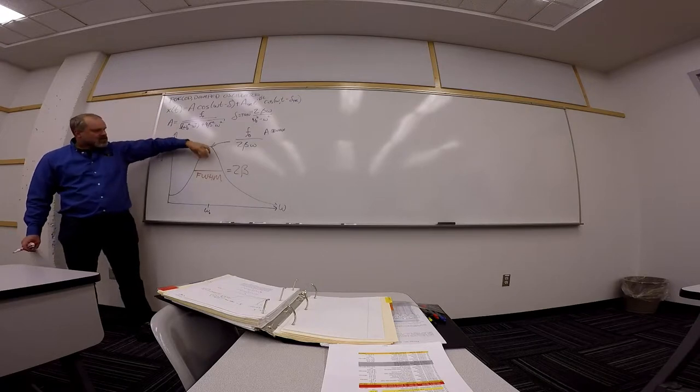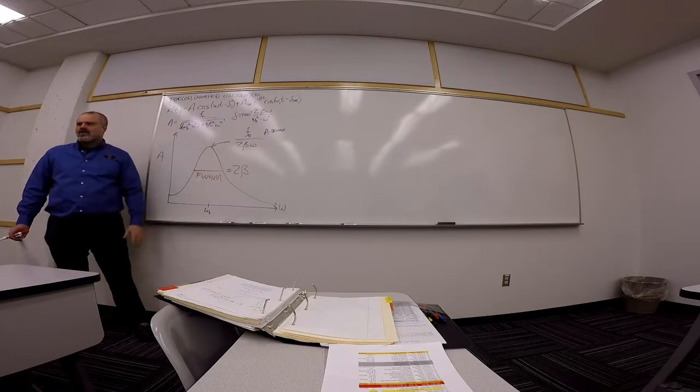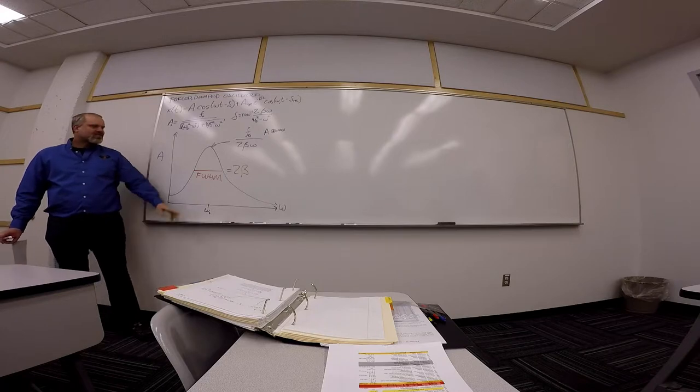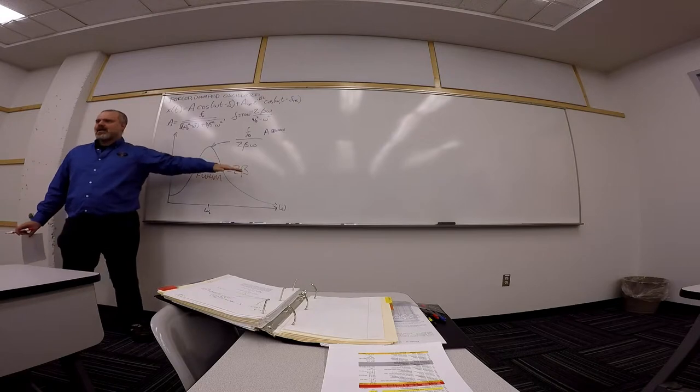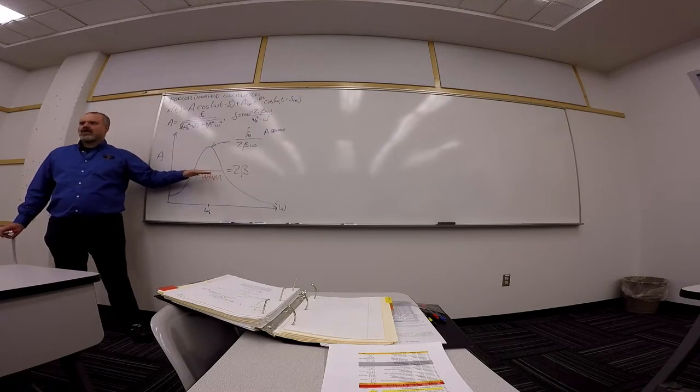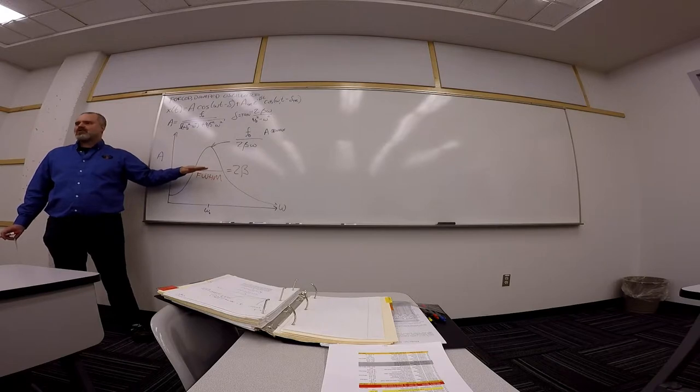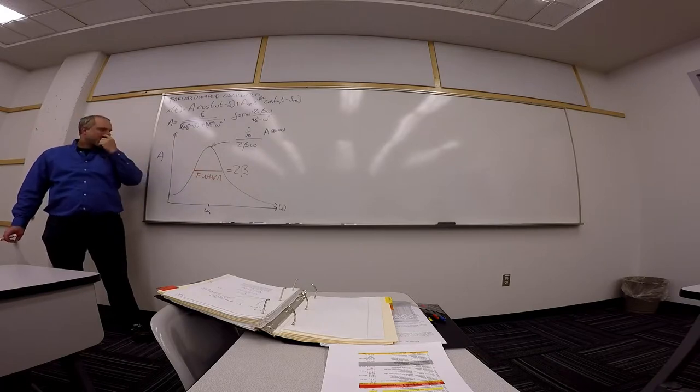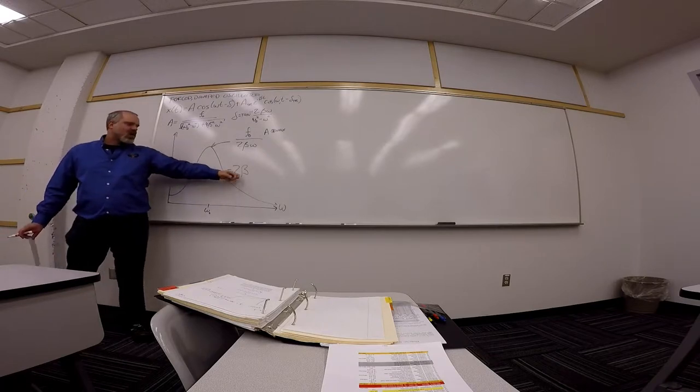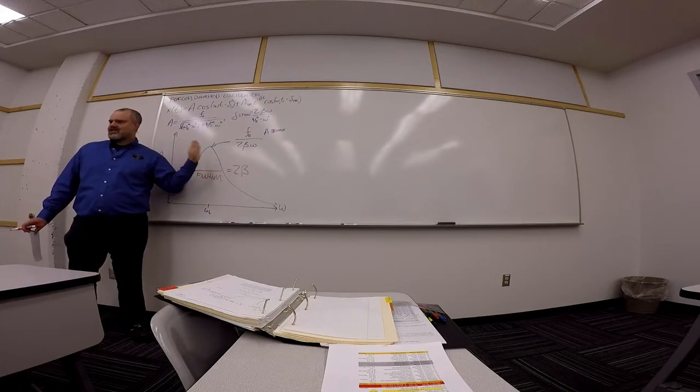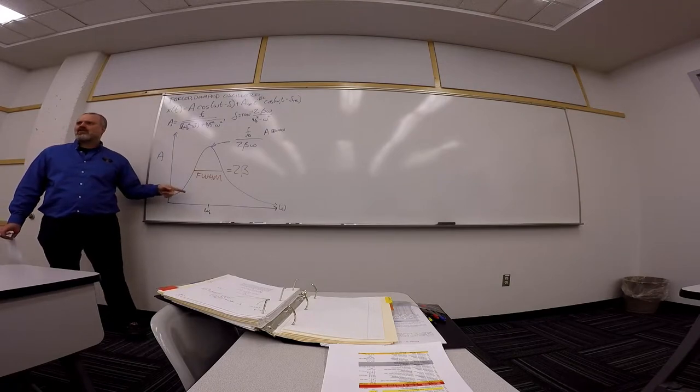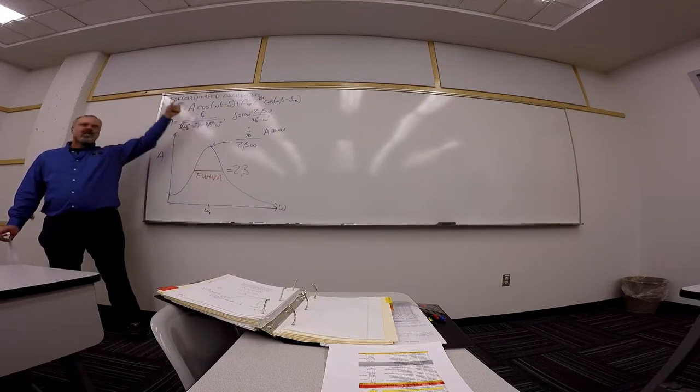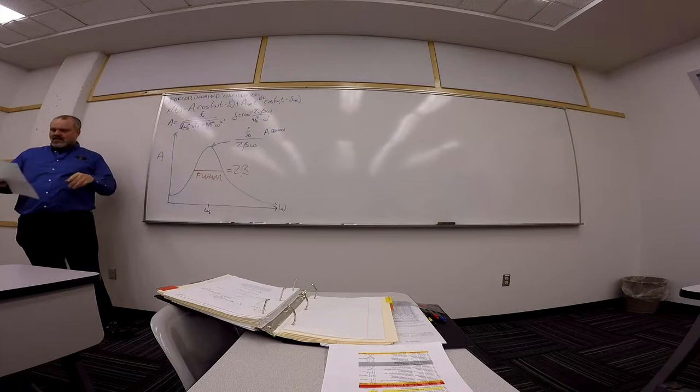And that full width at half max, the width here is equal to 2 beta. So the friction, beta, which is B over M, the friction controls how wide this peak is. So for instance, if the friction is very high, then you have a very broad but not very tall peak, a broad but short peak. Whereas when you have a very small beta, you have a very tight system that will not generate much response at all until you get very close to the frequency. But then when it does, it's going to shoot up and go crazy and be very high.